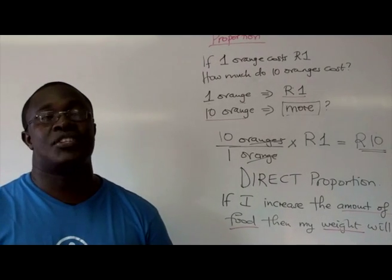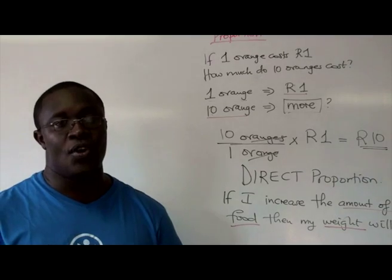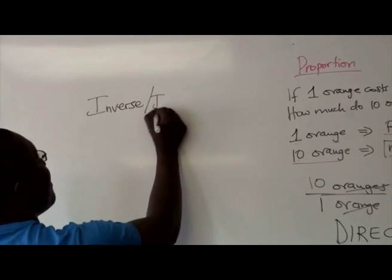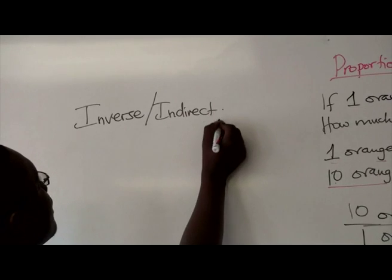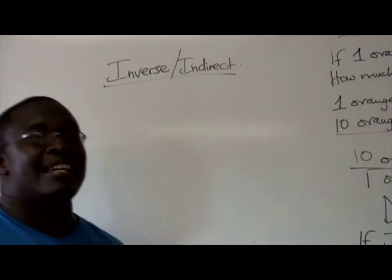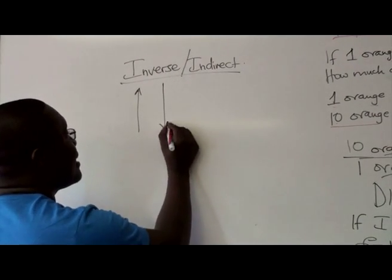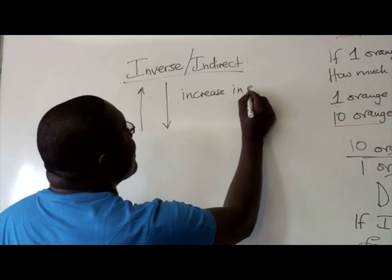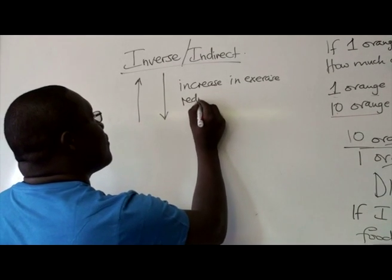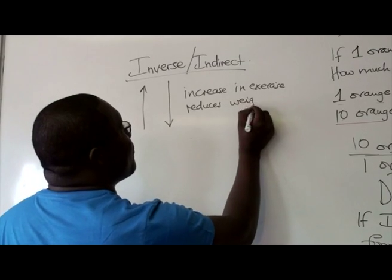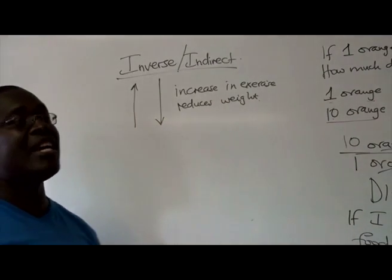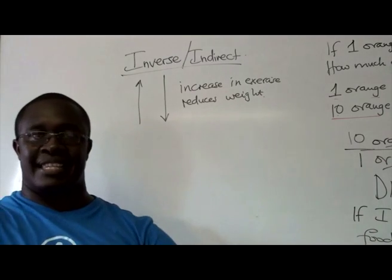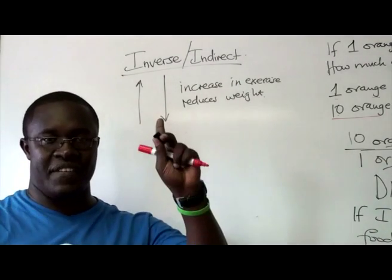The other type of proportion now is called inverse proportion, or indirect proportion. Now, when we're talking about indirect proportion, we're saying increasing one decreases the other quantity. For example, increase in exercise reduces weight. So we're saying that if you increase your exercise, your weight will reduce. So that's inverse relationship.